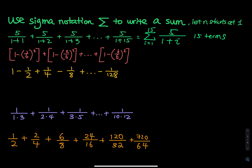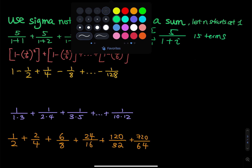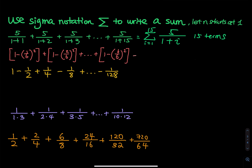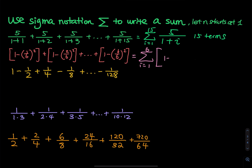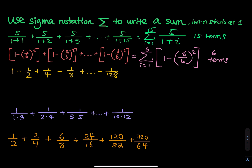In the second problem, the 1 is not changing, the exponent is not changing, and the 6 is not changing. But the numerator is changing: 1, 2, 3, 4, 5, 6 — so there are 6 terms. This is a summation where i goes from 1 to 6. We have a square bracket: 1 minus i divided by 6, raised to the second power. So 1 minus i over 6, to the second power, summed from i equals 1 to 6.